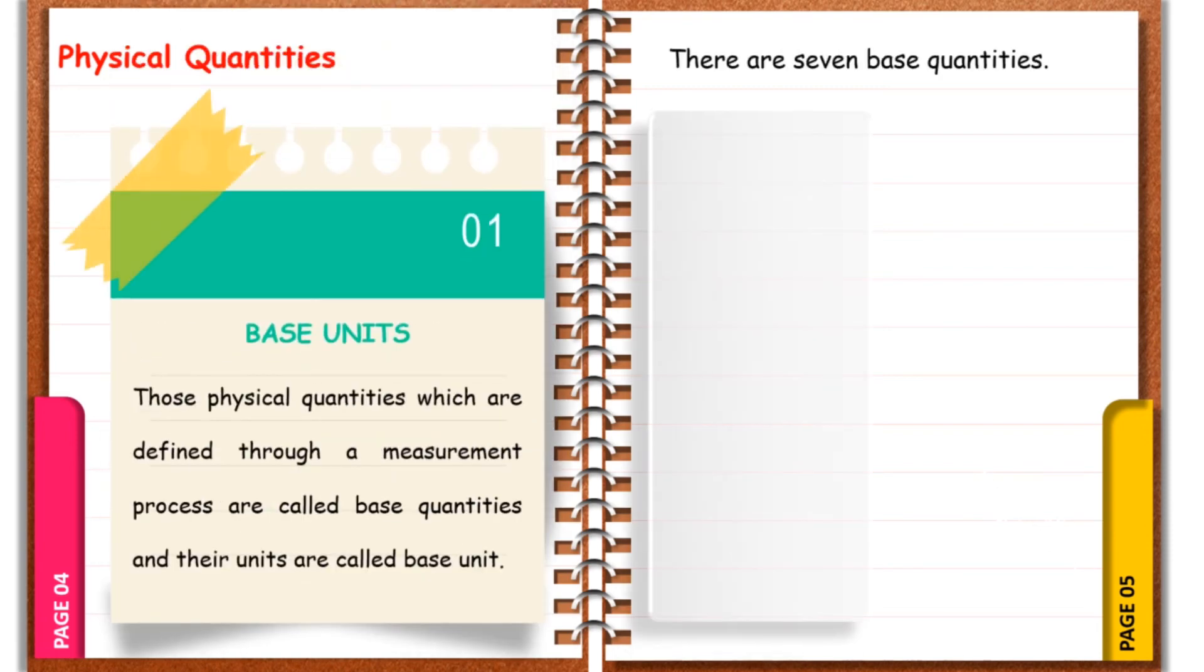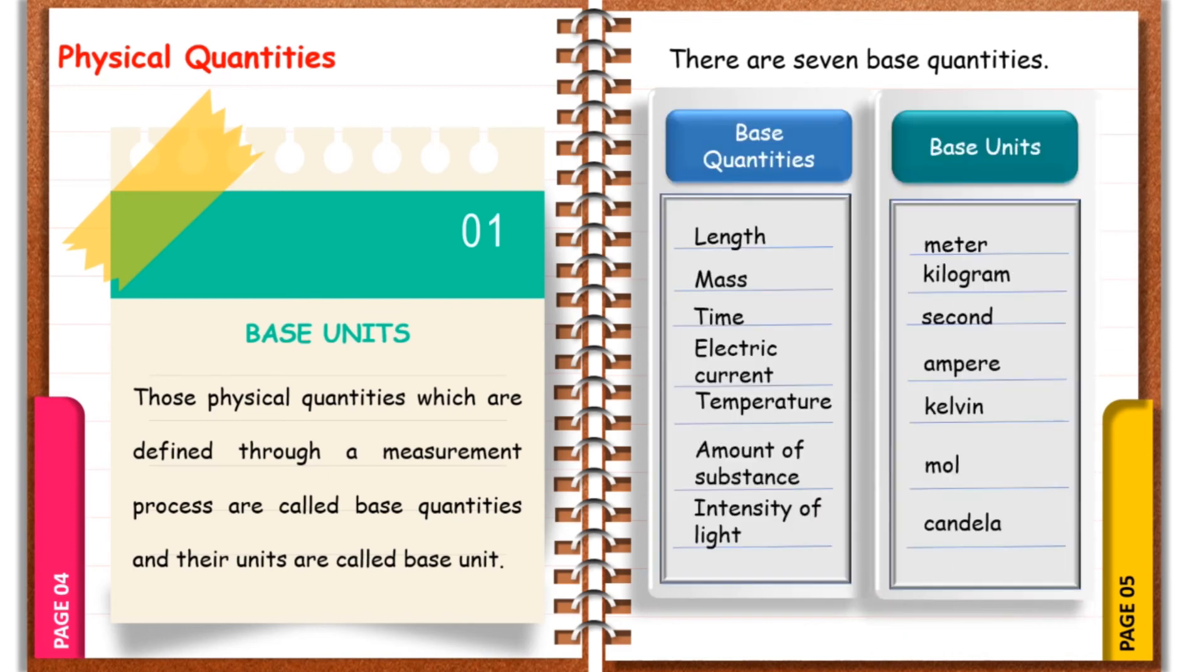Now we define each of them for you. The first one is base quantities. In any system of units, the units for some physical quantities must be defined through a measurement process. These are called the base quantities for that system and their units are the system's base units.